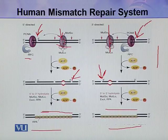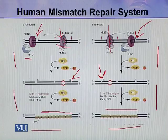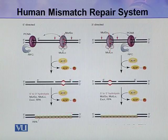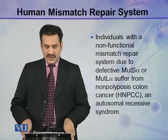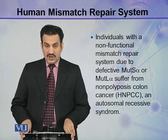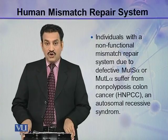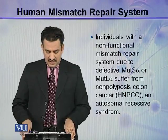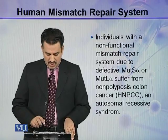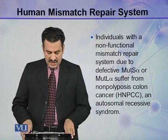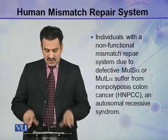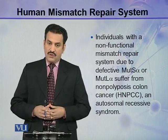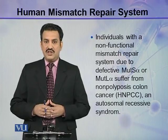Both these repair reactions are coupled with the production of energy from ATP hydrolysis. This is a brief overview of the human mismatch repair system. Individuals with a non-functional mismatch repair system due to defective MutS-alpha or MutL-alpha suffer from non-polyposis colon cancer and autosomal recessive syndrome. This will happen if MutS-alpha or MutL-alpha are non-functional in human beings.